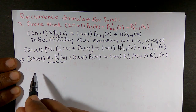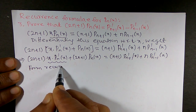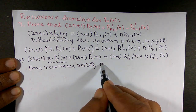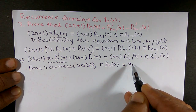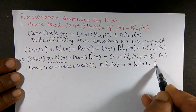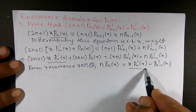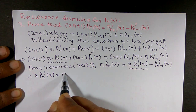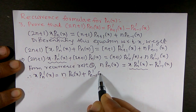From recurrence relation 2, which we have proved, we know that n · Pₙ(x) = x · P'ₙ(x) - P'ₙ₋₁(x). Rearranging to obtain the value of x · P'ₙ(x): therefore x · P'ₙ(x) = n · Pₙ(x) + P'ₙ₋₁(x).